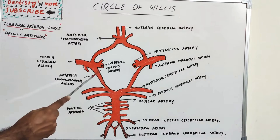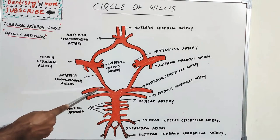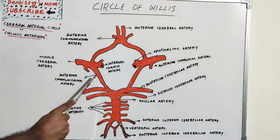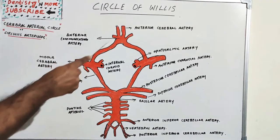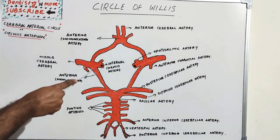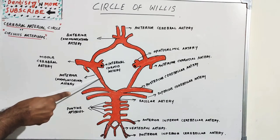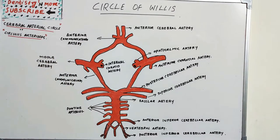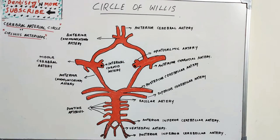Next is the posterior cerebral artery, also paired with left and right. The posterior communicating artery is again paired with right and left. So the anterior cerebral artery, internal carotid artery, posterior cerebral artery, and posterior communicating artery are the paired arteries, while the anterior communicating artery is the unpaired artery. Together these form the Circle of Willis.